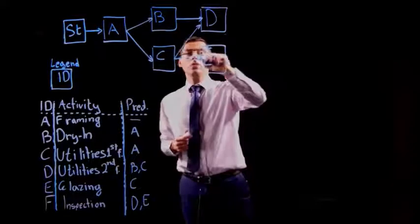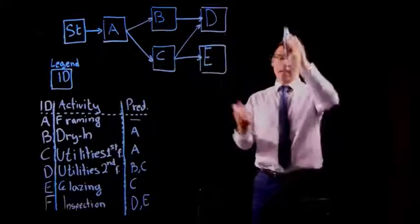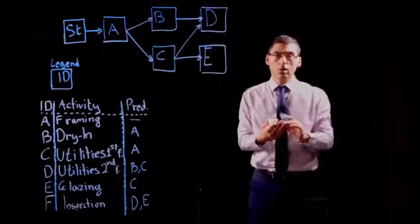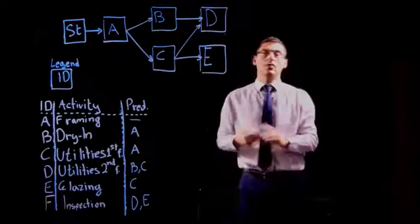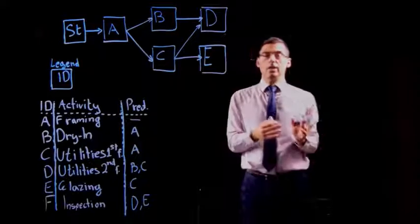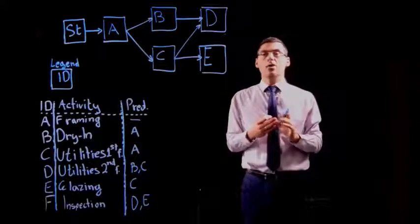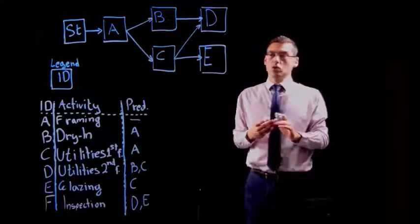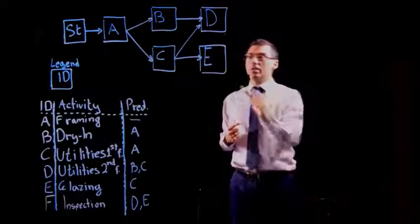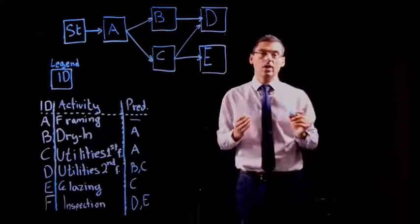Don't worry about where you are going to put exactly the node on the network. That's not a big worry. You can go further down, further up, left or right, wherever you have space. Although it would be nice to follow the sequence of execution. However, don't forget that this is what we call a directed graph.